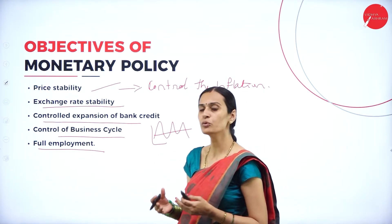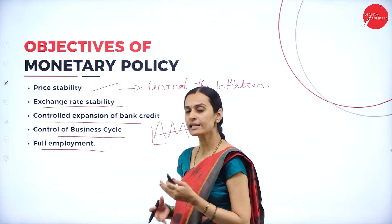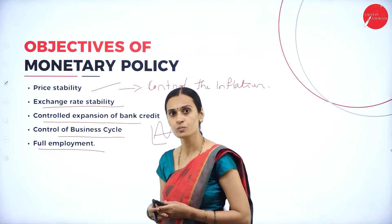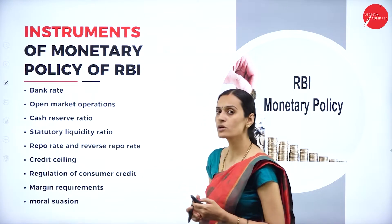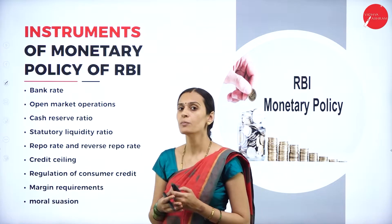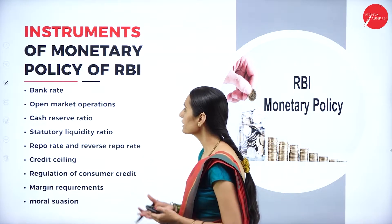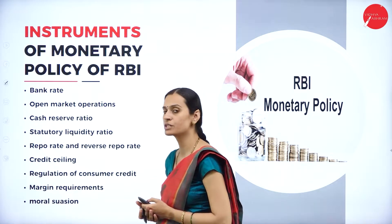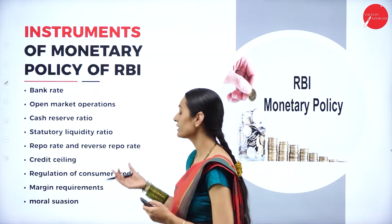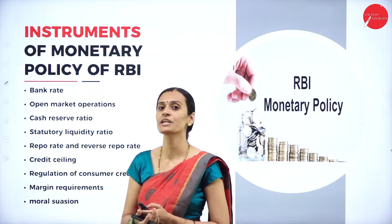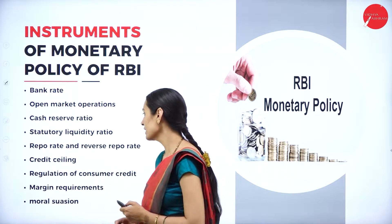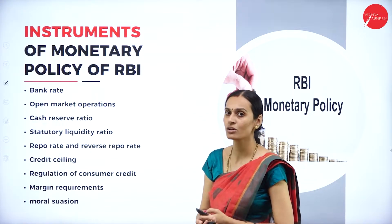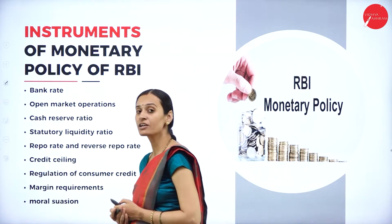RBI always tries to remove cyclical fluctuations in the monetary system under these objectives. Now let us discuss the different instruments of monetary policy: bank rate, open market operations, cash reserve ratio, statutory liquidity ratio, repo rate and reverse repo rate, credit ceiling, regulations of consumer credit, margin requirements, and moral suasion. The first one is bank rate.